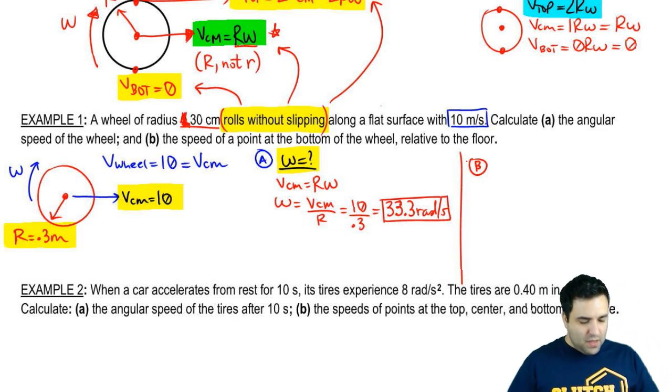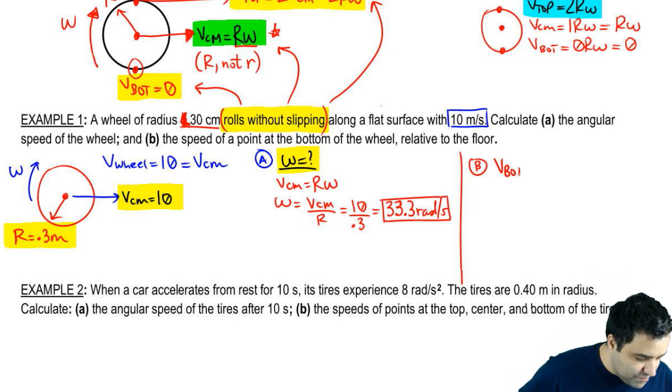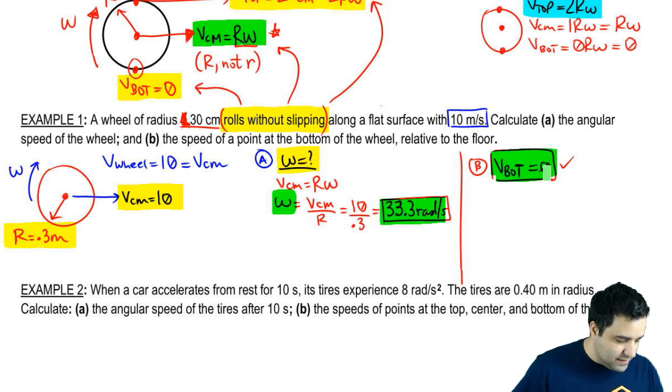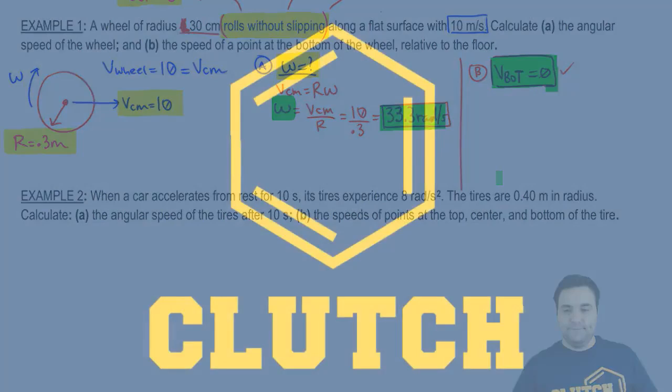Part B, the speed of a point at the bottom of the wheel relative to the floor. So this is just this V bottom right here, and if you know this conceptually, or if you remember the equation, V bottom is just always 0 for a rolling wheel no matter what. So that's that simple. Omega is 33, and V bottom is 0. That's it for this one. Let's do the next example.